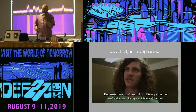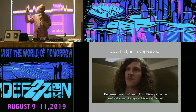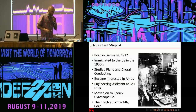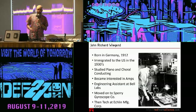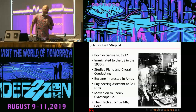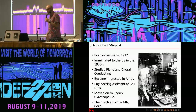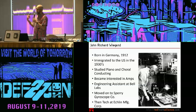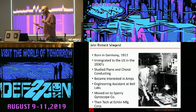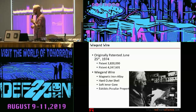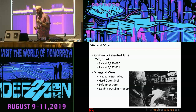Who's heard of Wiegand? Wiegand was actually a person — John Richard Wiegand, a very badass OG German hacker born in 1912. He immigrated to the US to study choral conducting at Juilliard — a huge music nerd. While there, he became really interested in audio amplifiers and through that, electromagnetics. He worked various jobs, including making tape recorders for the US government, before making some really interesting discoveries. He came up with something called Wiegand Wire, originally patented in 1974.